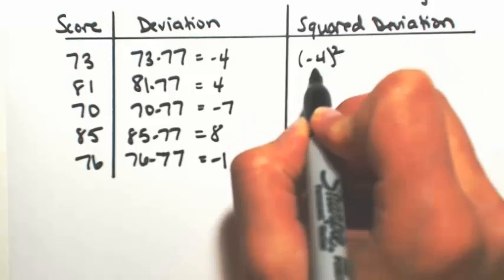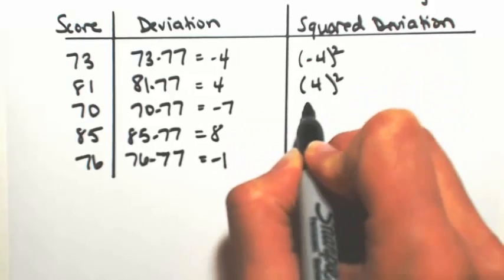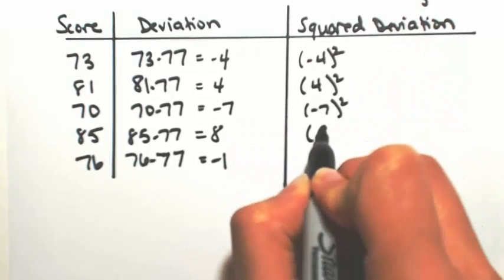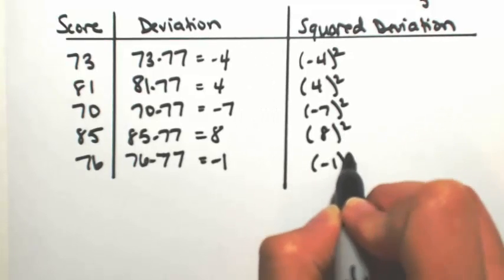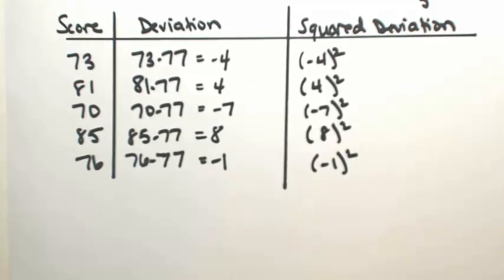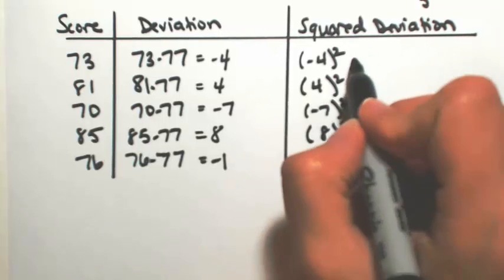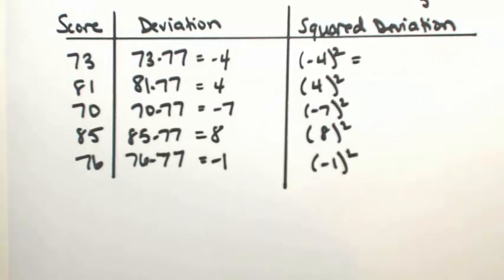So we're going to square all of these numbers. So negative 4, we're going to square that. 4 squared, negative 7 squared, 8 squared, and negative 1 squared. So anytime you square a number, it's always going to be positive. That's the whole point of what we're doing. We'll undo the square in the very last step.